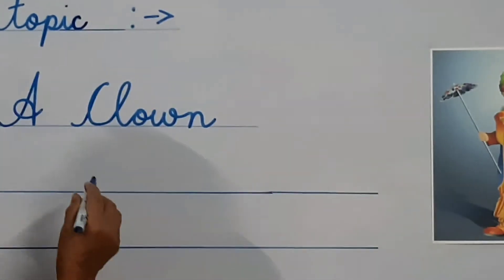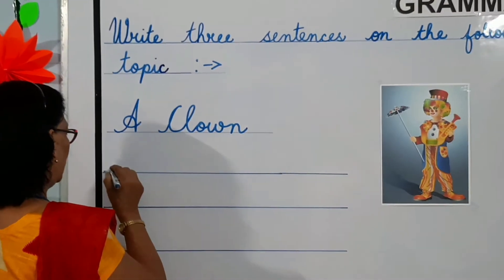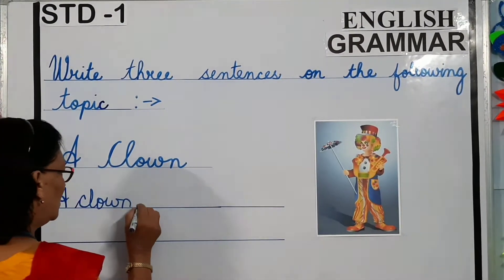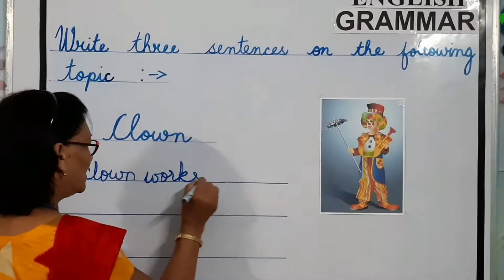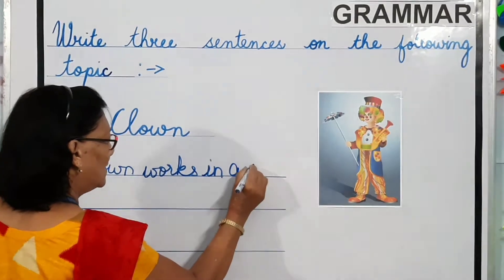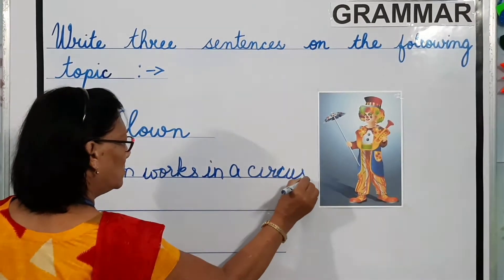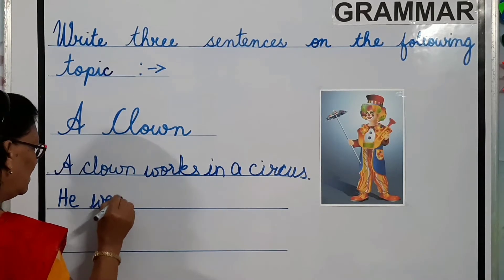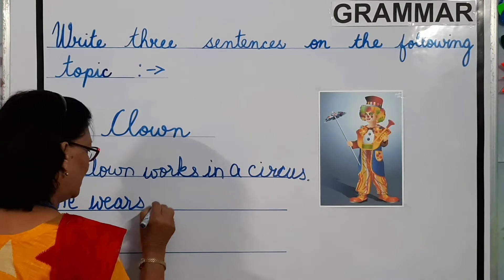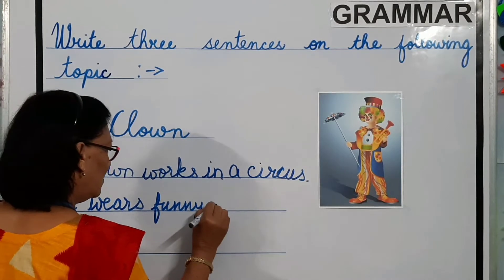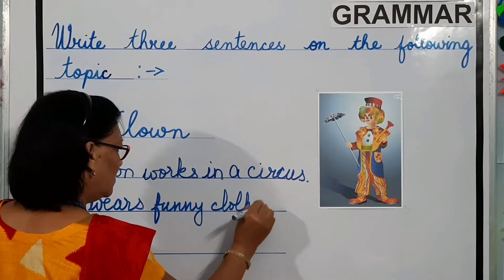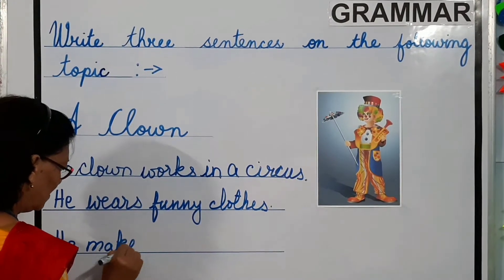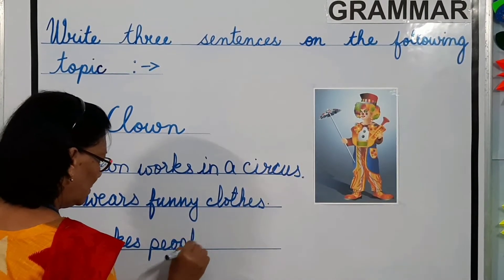Now let's write three sentences on a clown. A clown works in a circus. He wears funny clothes. He makes people laugh.